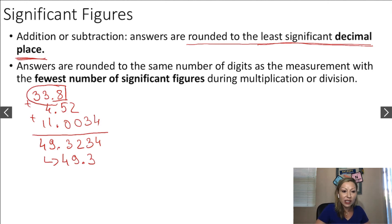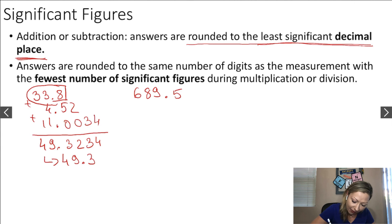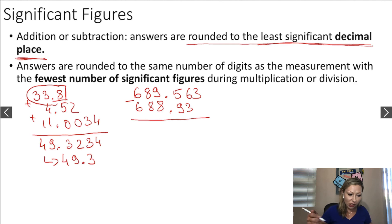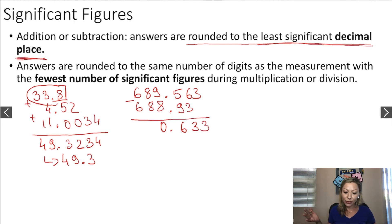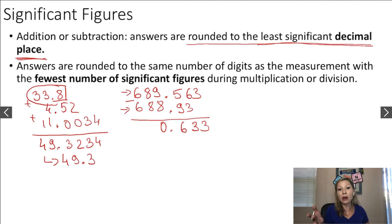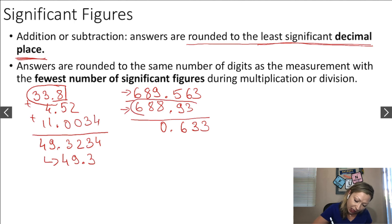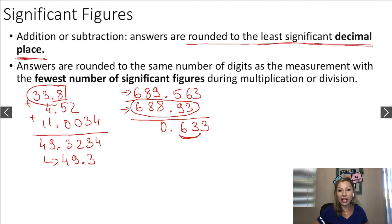For subtraction: 689.563 minus 688.93. Doing this calculation gives 0.633. Now, which number has the smallest number of significant decimal places? The second one, 688.93, which has two decimal places. So I cannot have more than two digits after the decimal point, meaning I round to 0.63.